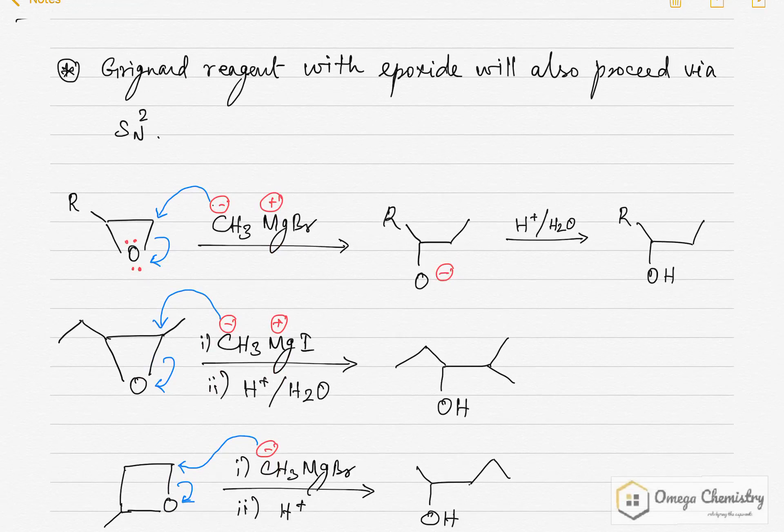Now, Grignard reagent will also react with the epoxide and it proceeds via SN2 mechanism. You can see here. So, the methyl anion attacks at the less hindered carbon and subsequent ring opening to give the final product.